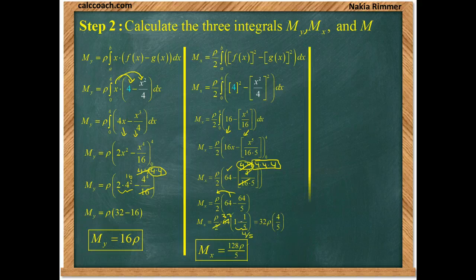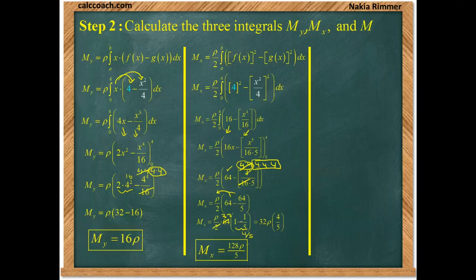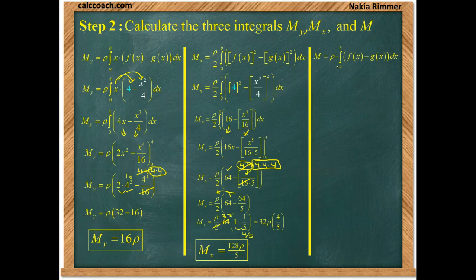Finally, we need the mass. And the formula is density times area. This is the area.